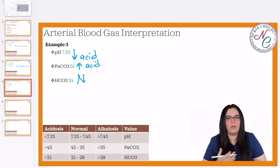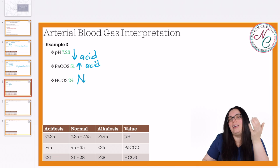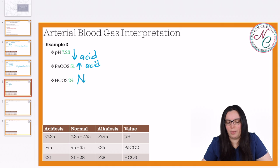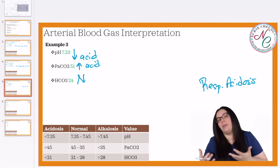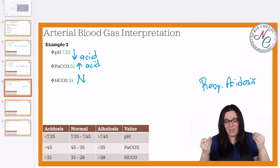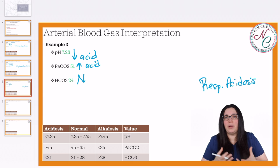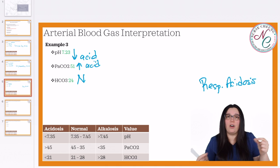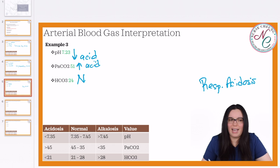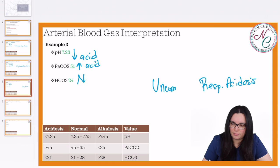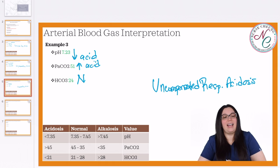So we have to determine what's going on with our arterial blood gas. We begin by looking at our pH — it's acidotic. What other component is acidotic? That is our respiratory component, our PaCO2. So we know we have a respiratory acidosis taking place. Next, we need to determine if there is any compensation taking place. Our HCO3, our base buffer system, isn't really doing anything — it's still within the normal limit. So when we have only one system out of normal and the other is normal, we have an uncompensated respiratory acidosis.